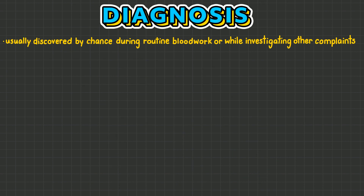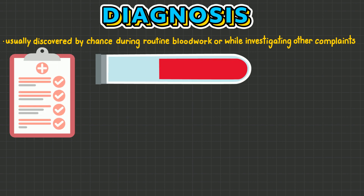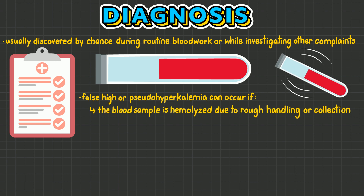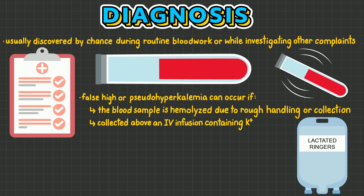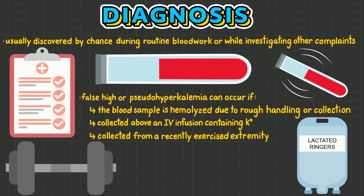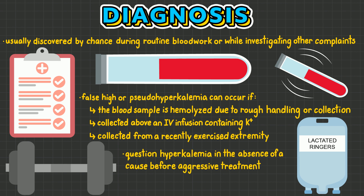Diagnosis of hyperkalemia is usually discovered by chance during routine blood work or while investigating other complaints. It is important to note that a false high, or pseudo-hyperkalemia, can occur if the blood sample is hemolyzed due to rough handling or collection, if the sample is collected above an IV infusion containing potassium, or collected from a recently exercised extremity. Therefore, it is important to question hyperkalemia in the absence of a cause before aggressive treatment is started.